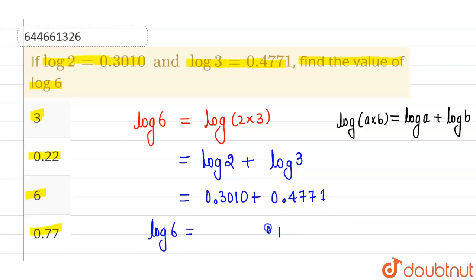So after adding, you will get the value of log 6 as 0.7781, which can be approximately written as 0.77, which is in the option. So option 4 is correct and rest all options are incorrect. I hope you understood, thank you.